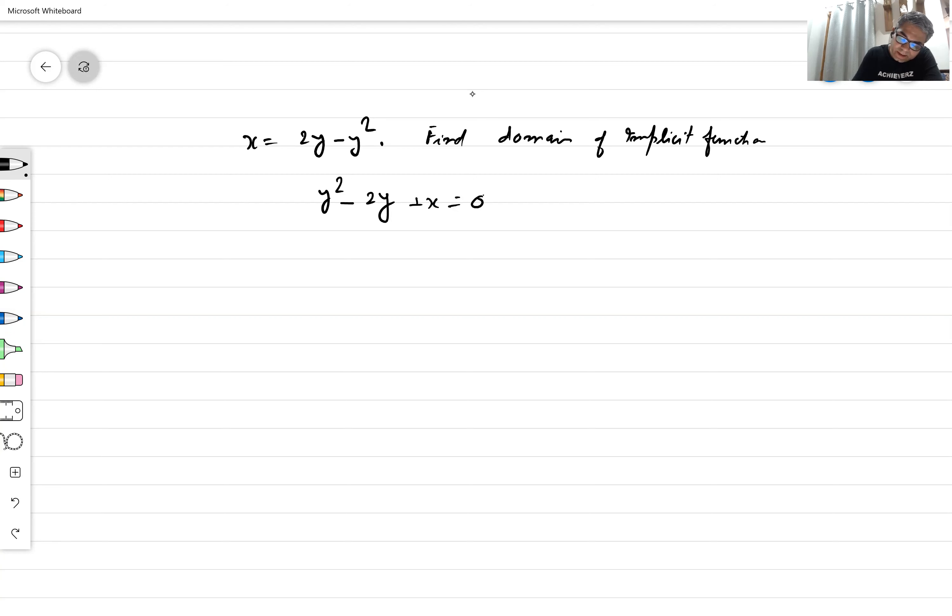Its discriminant D should be greater than or equal to 0, so 4 - 4x should be greater than or equal to 0. So x belongs to minus infinity to 1. This type of question if it comes in front of you.